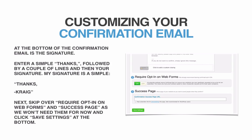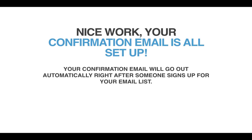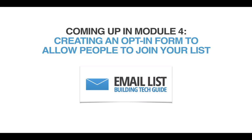The Success Page is the page subscribers get sent to after opting in — we'll be overwriting that later, so just remember what it is. Nice work — your confirmation email is all set up. This email will go out automatically right after someone signs up for your email list. Next, we're moving on to module number four, where we'll be creating an opt-in form or sign-up form to allow people to join your list. I'll see you over there.